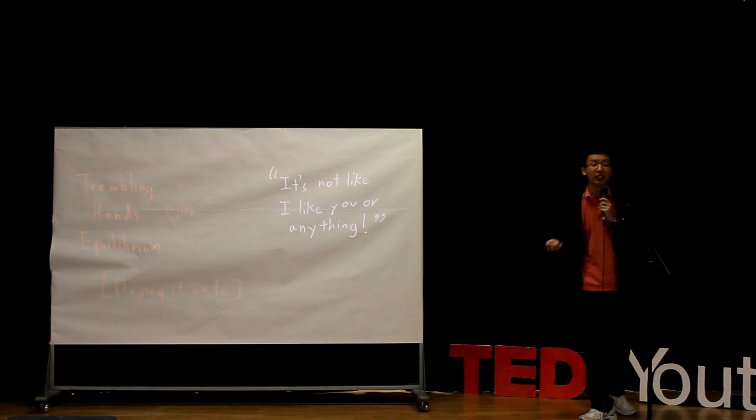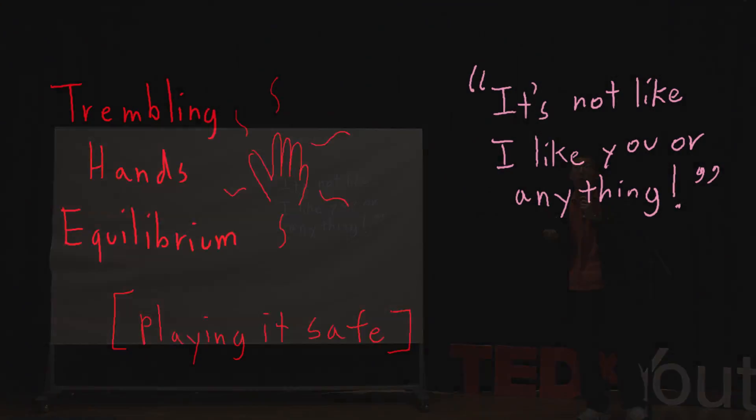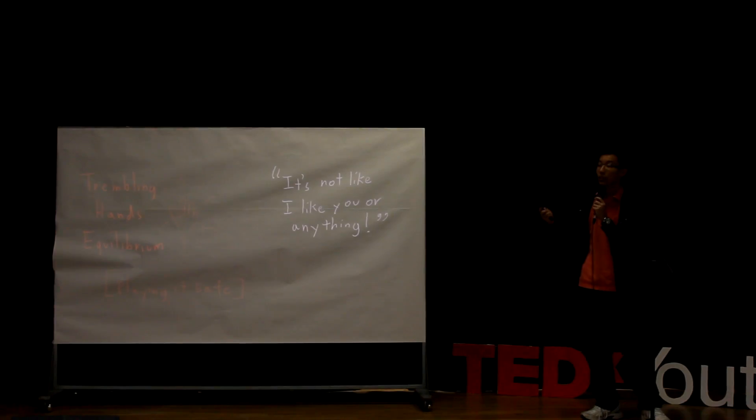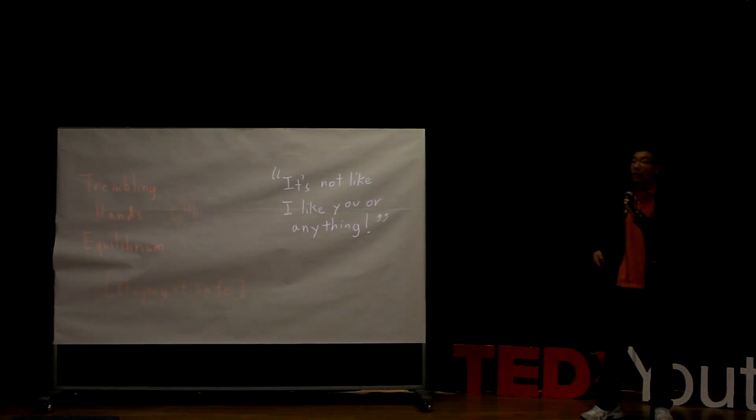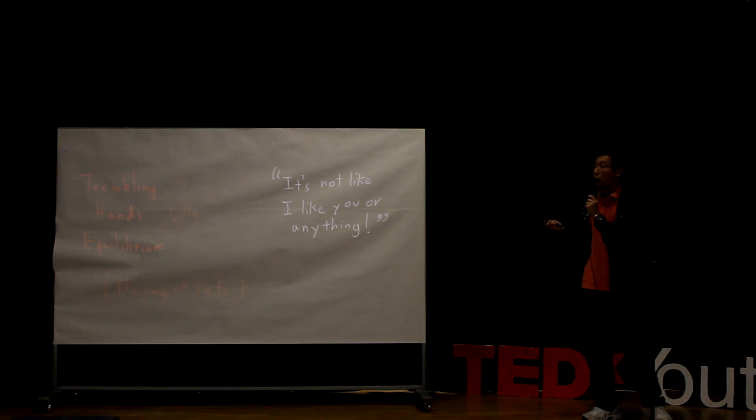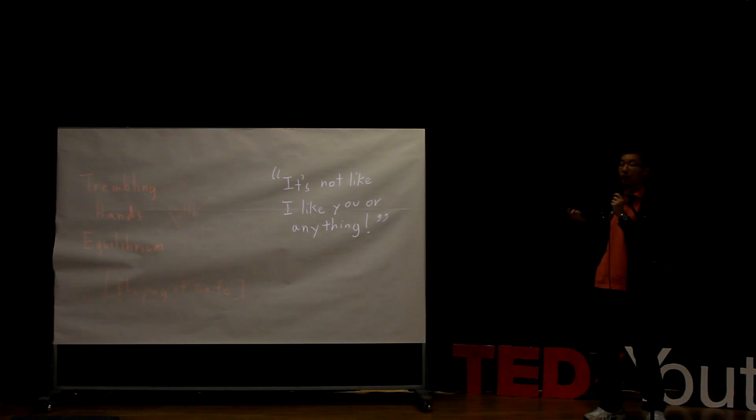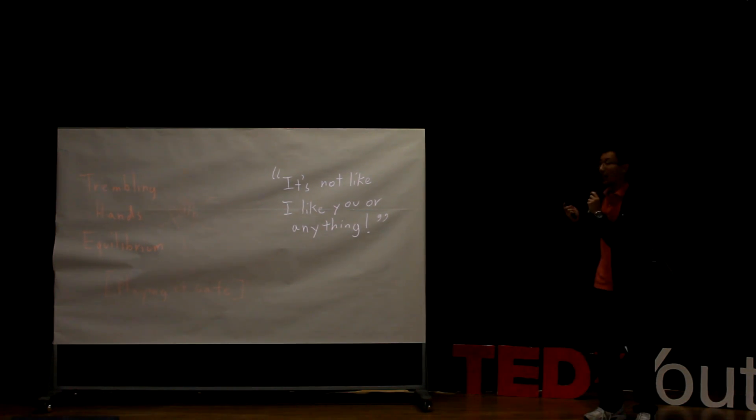This is an illustration of the trembling hands equilibrium, which is essentially the belief that your partner's trembling hands may accidentally select the wrong decision in your choice-making game. So in order to play it safe, you'd choose the decision that would result in the most consistent outcome for you, in this case being to remain silent.